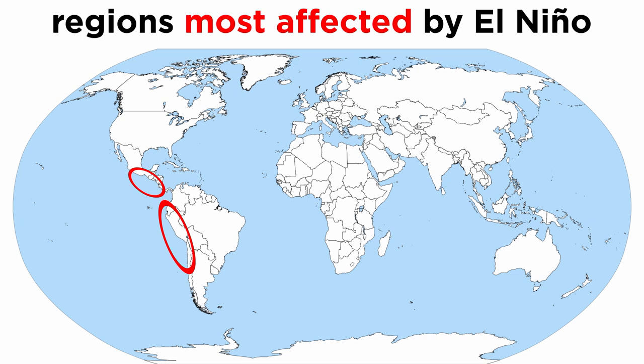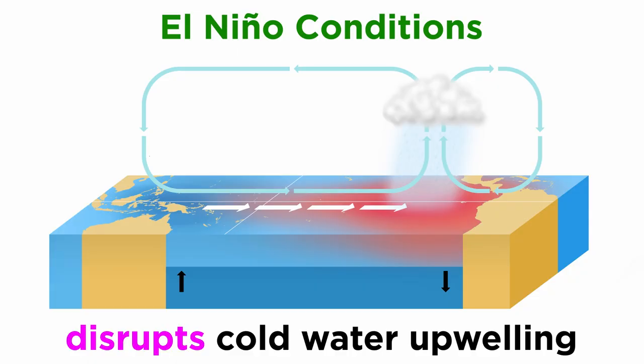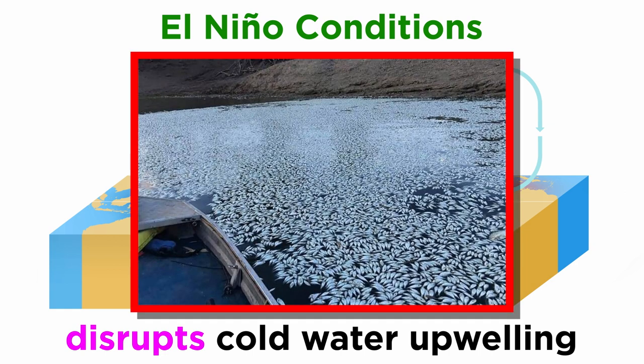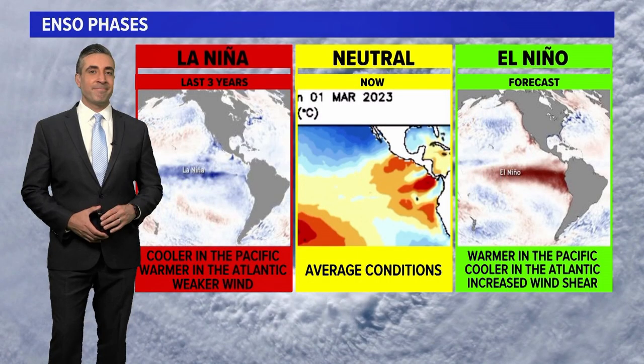When El Niño occurs, it impacts the west coast of South America and southwestern portions of North America. El Niño disrupts the cold water upwelling to the surface of the ocean, which typically brings with it nutrients and ample fishing opportunities. Instead, warm water pools at the surface of the ocean, suppressing the upwelling and often disrupting the ecosystem and fishing community. These effects are felt globally. If you ever hear it's an El Niño year during a weather report, now you know why — it will affect global temperature and precipitation.